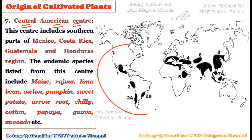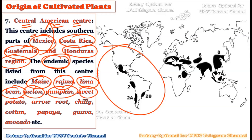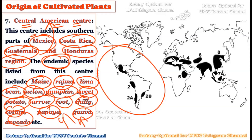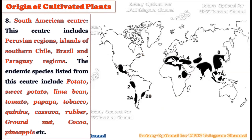The seventh center is the Central American center, which includes Mexico, Costa Rica, Guatemala, and Honduras. The endemic species from this center include maize, kidney bean, lima bean, pumpkins, sweet potato, arrowroot, chili, cotton, papaya, guava, and avocado. Papaya and guava are specific examples of plants that originated in the American subcontinent and were later introduced throughout the world, including India.